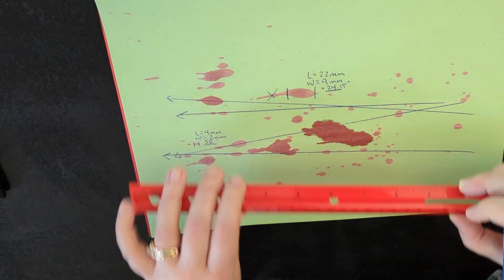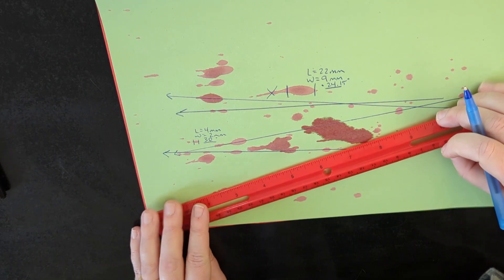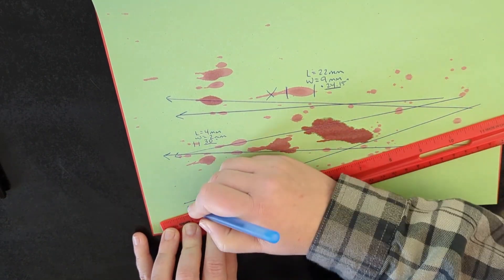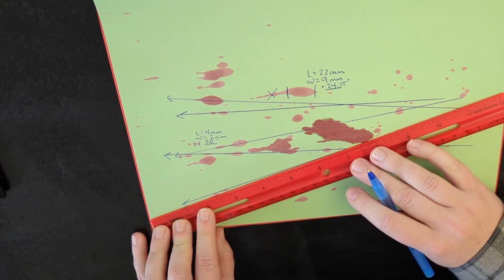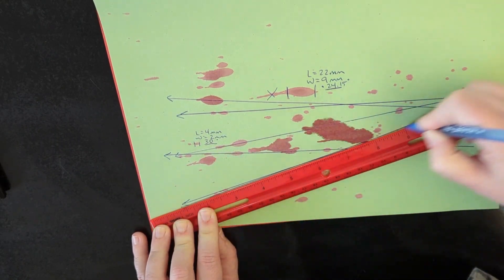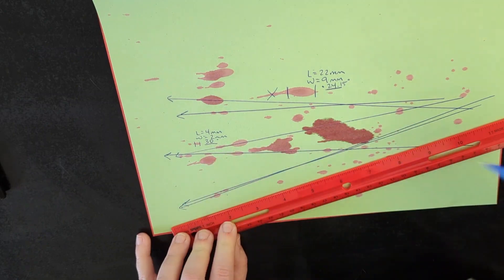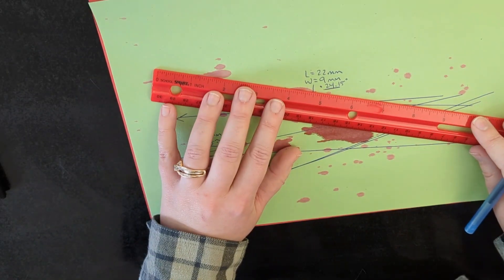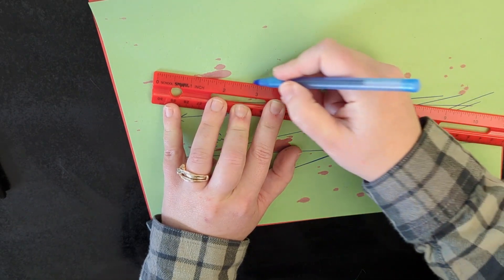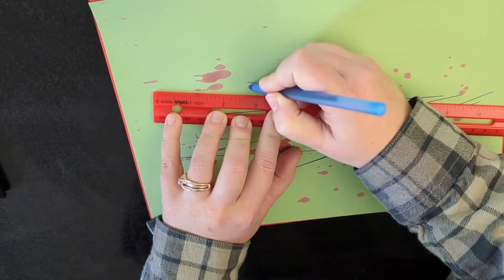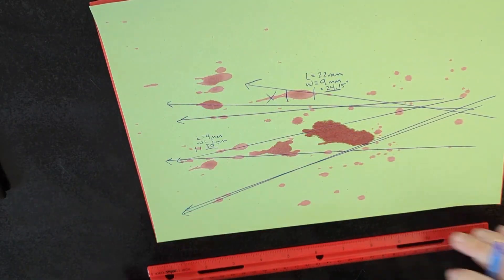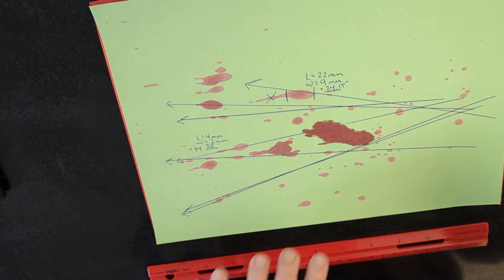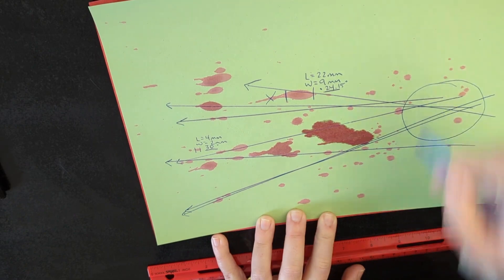See another one right here next to it. So from what I'm seeing, here's another little one right here in the middle. Looks like our area of convergence is right about here. That's our point of origin.